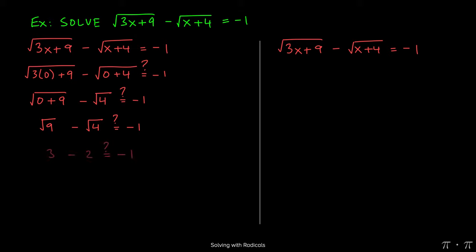Now 0 plus 9 in the first radical simplifies to just the square root of 9. Square root of 9 is simply 3, square root of 4 is simply 2, and we're trying to determine if 3 minus 2 equals negative 1, which unfortunately it does not. This indicates that x equals zero is not a solution.